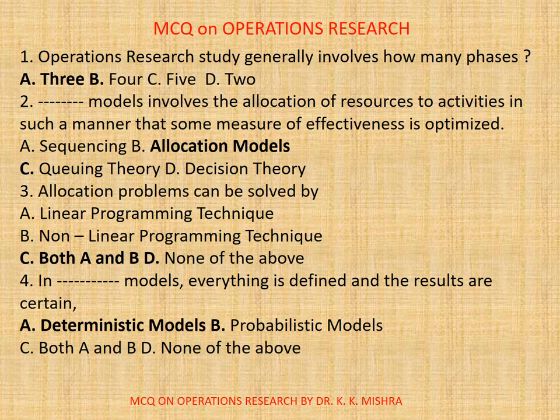Question number 2. Dash models involves the allocation of resources to activities in such a manner that some measure of effectiveness is optimized. A, Sequencing. B, Allocation Models. C, Queuing Theory. D, Decision Theory. Correct option is A, Allocation Models.